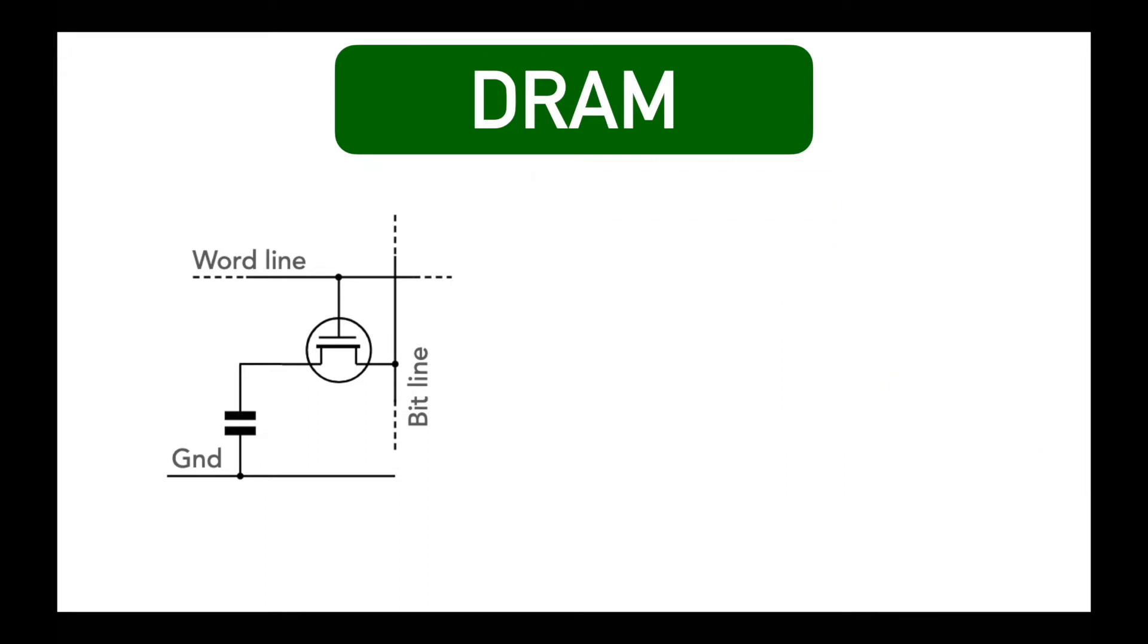The structure of DRAM memory cell is very simple, which consists of single capacitor and a transistor. This allows DRAM to reach very high density. Millions of memory cells can be adjusted on single chip.